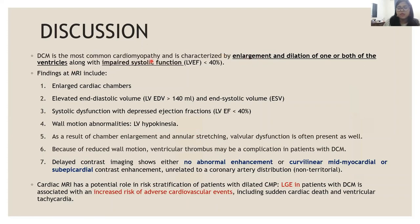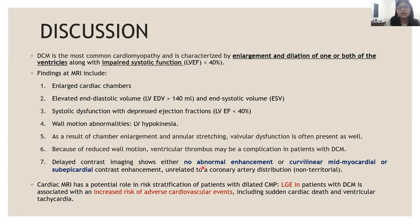Dilated cardiomyopathy is the most common cardiomyopathy and shows enlargement and dilatation of one or both ventricles along with impaired systolic function. MRI findings include enlargement of cardiac chambers, increased end-diastolic and end-systolic volumes, systolic dysfunction with depressed ejection fraction, wall motion abnormalities in the form of left ventricular hypokinesia, and valvular dysfunction due to annular stretching. Complications such as ventricular thrombosis can be seen due to hypokinesia. Characteristically, delayed contrast imaging in dilated cardiomyopathy can show either no abnormal enhancement — seen in 65% of our cases — or patchy mid-myocardial or sub-epicardial contrast enhancement, seen in 30% of our cases.